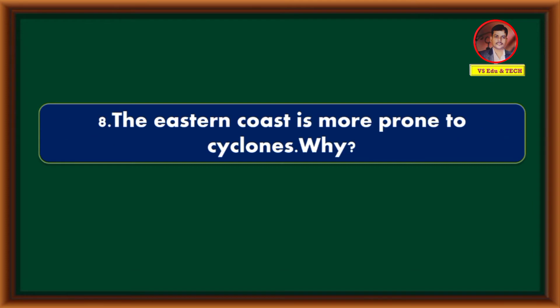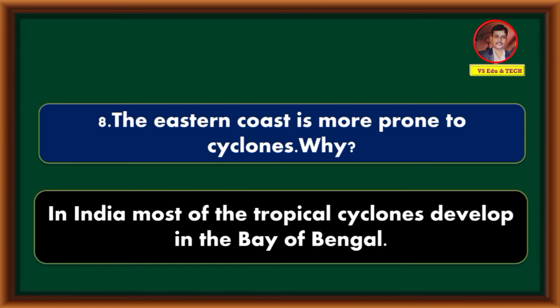The eastern coast is more prone to cyclones. Why? In India, most of the tropical cyclones develop in the Bay of Bengal.